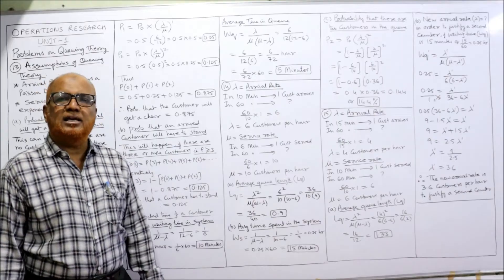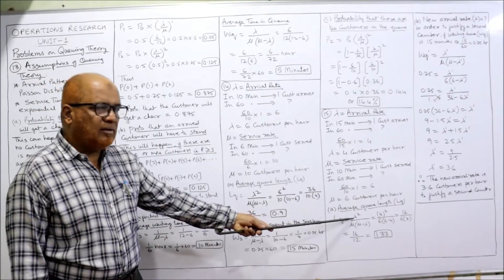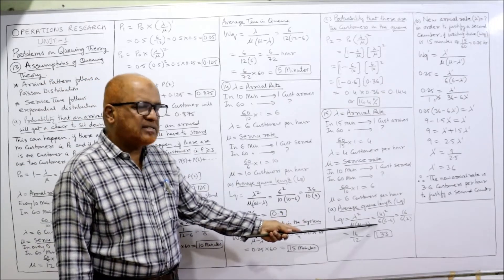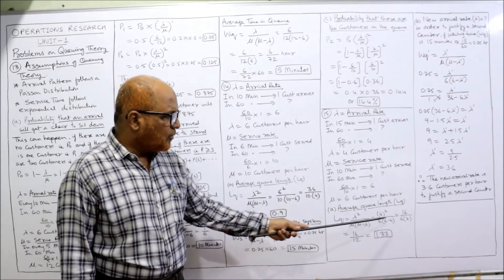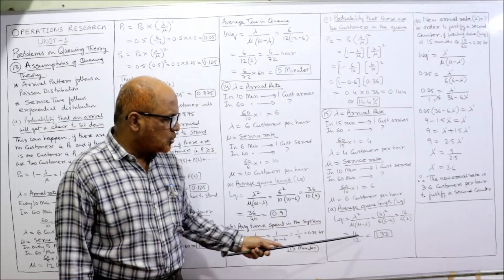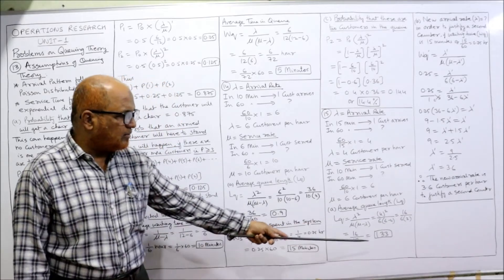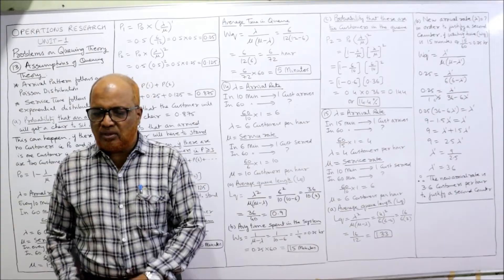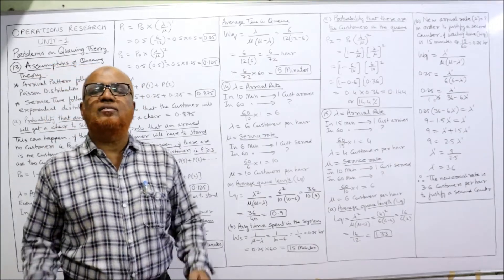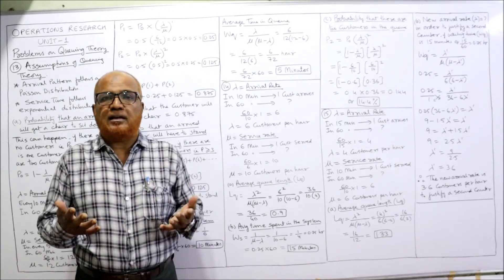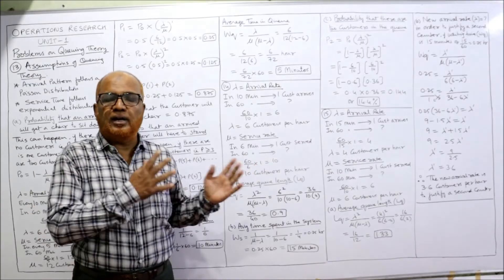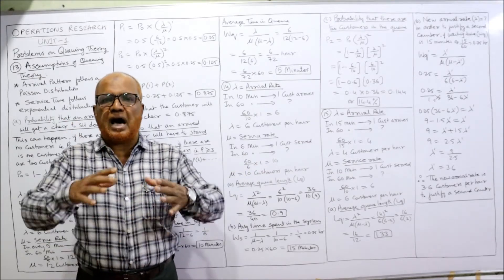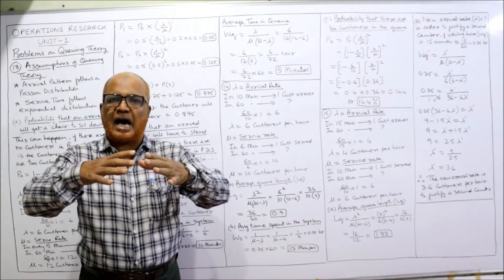Average queue length: Lq = λ² / [μ(μ − λ)] = 4² / [6 × (6 − 4)] = 16 / 12 = 1.33 customers. Note: a limitation of queuing theory is that the number of units can come out as a fraction, which is not practically possible but is theoretically acceptable. So average queue length is 1.33 customers.